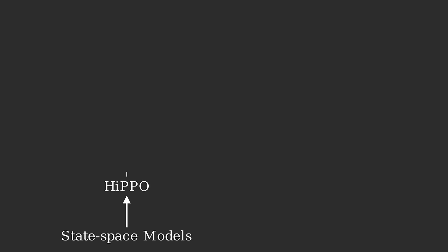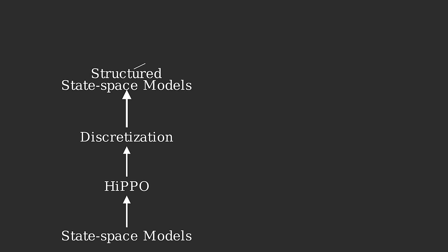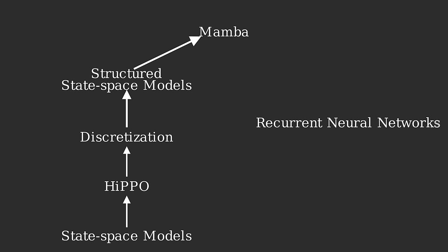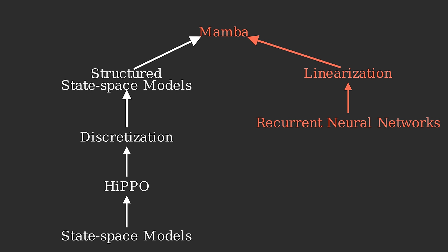Usually Mamba is presented as an extension of something called a state space model. State space models are another type of sequence model that have been steadily gaining popularity over the past few years. But to be honest, the theory behind state space models is massively overcomplicated and uses some pretty advanced mathematics. Fortunately, Mamba can also be understood as an extension of recurrent neural networks, or RNNs for short, which are much easier to understand. So in this video we will be taking the RNN path to understanding Mamba.